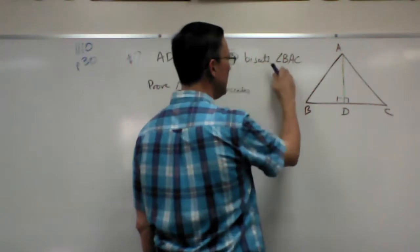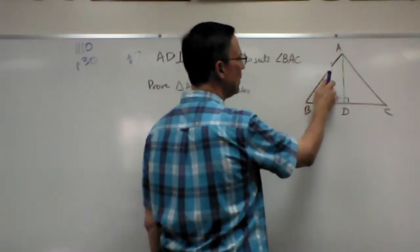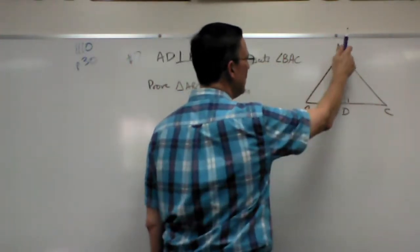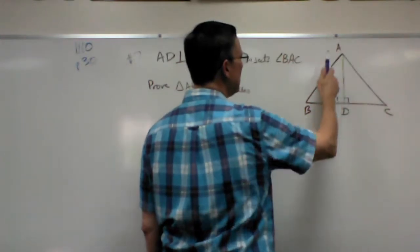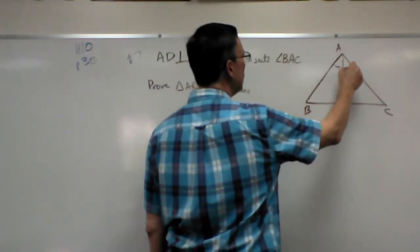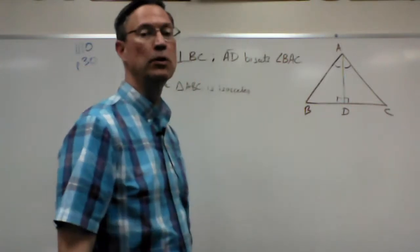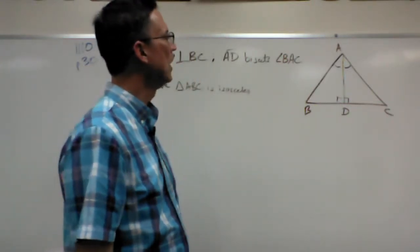So we have to use this information to see what does that tell me. Well, if this bisects angle BAC, then this angle and this angle will have to be congruent. So we can tell that.